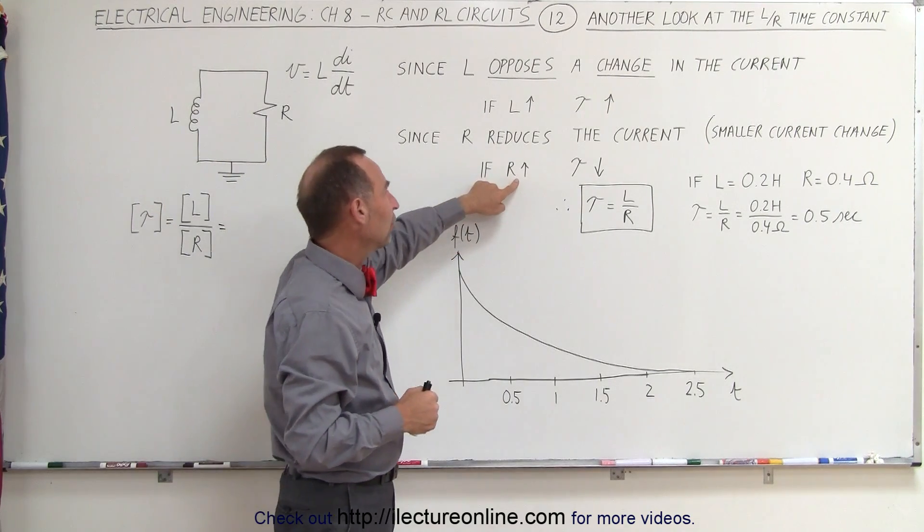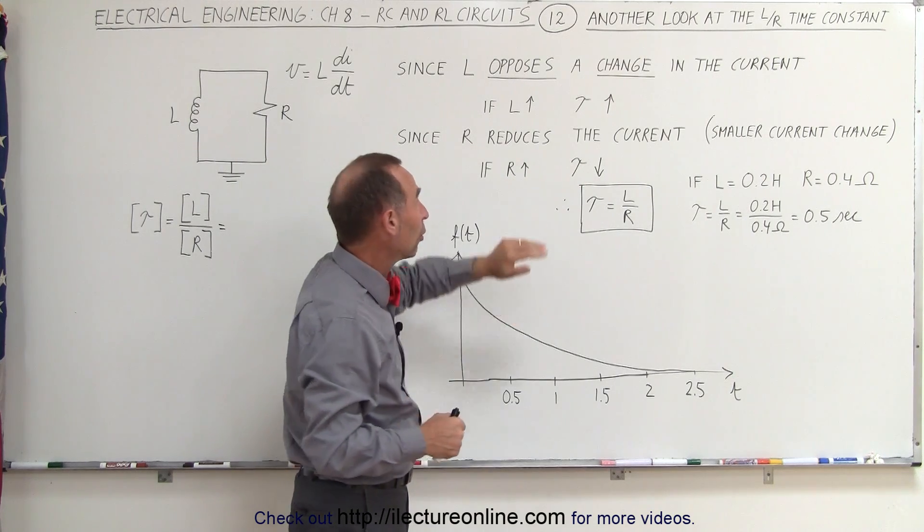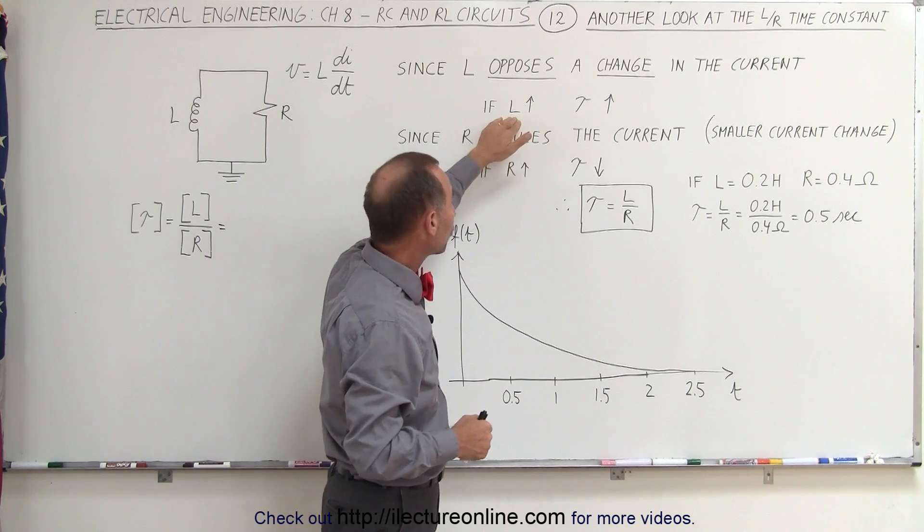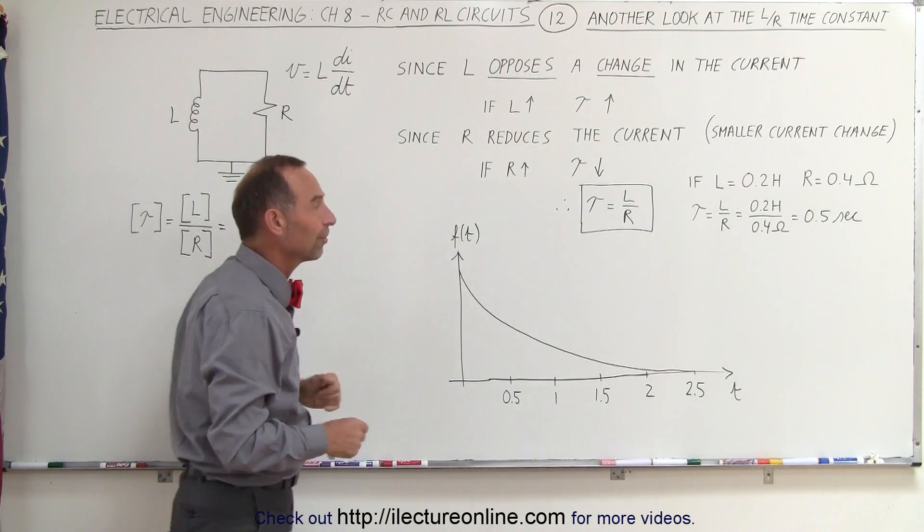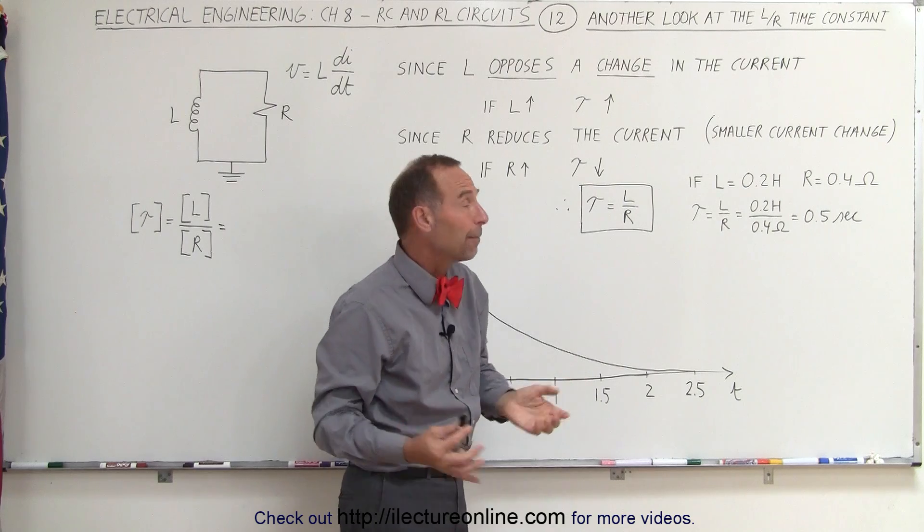Therefore, if the resistance goes up, the time constant goes down. So the time constant is proportional to the inductance, and it's inversely proportional to the resistance, and that's why the equation looks like this.